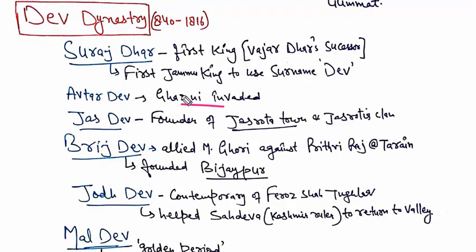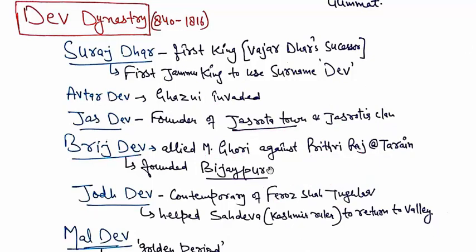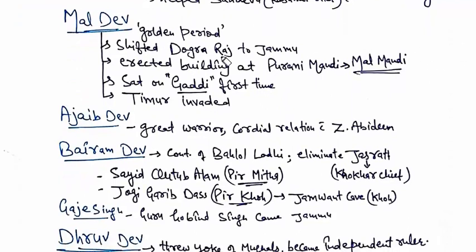The invasion of Mahmood Ghaznavi was during the time period of Avtar Dev. Another important ruler is Jas Dev, who was the founder of Jasrota town and Jasrota clan. Another ruler is Bridge Dev, who joined hands with Muhammad Gori against Prithvi Raj Chohan in the Battle of Terrain. Bridge Dev also founded Vijaypur, which is now called Vijaypur. Another important ruler is Jodh Dev, who was the contemporary of Firoz Shah Tughlaq of the Delhi Sultanate, and helped Saha Dev, the Kashmir ruler, to return to the valley. One of the most important rulers of this dynasty is Maldev, whose period is called the golden period. Maldev shifted the Dogra capital to Jammu and erected buildings at Purani Mandi, which is called Mal Mandi.